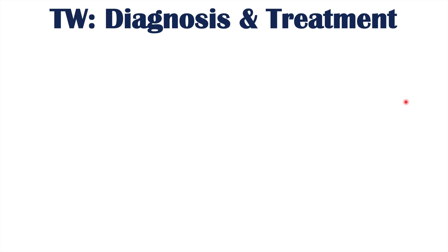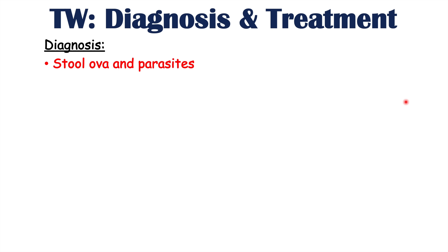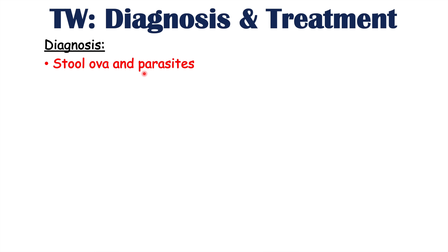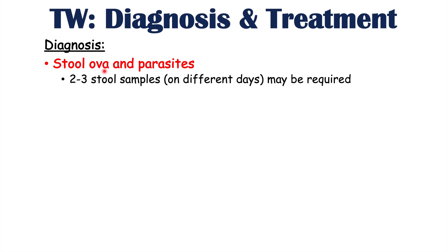Those were all of the important species of tapeworms that can infect humans. Now let's talk about how clinicians diagnose and treat a tapeworm infection. The diagnosis is made by doing a stool ova and parasites test — looking at a patient's stool for eggs from a particular tapeworm or for the tapeworms themselves. Two to three stool samples are often required, taken on different days, because it may not show up on only one stool sample.